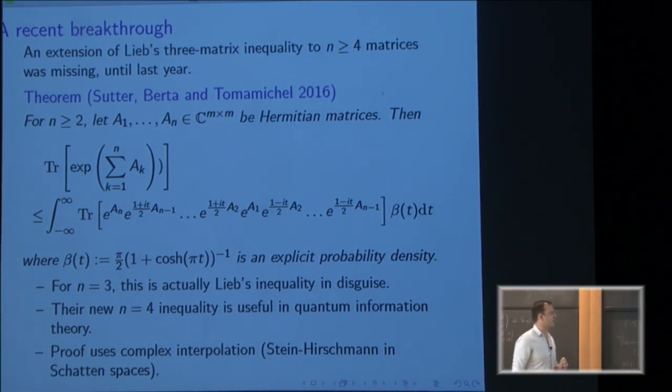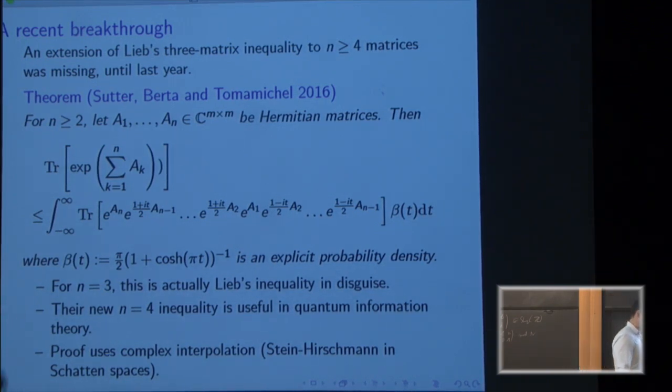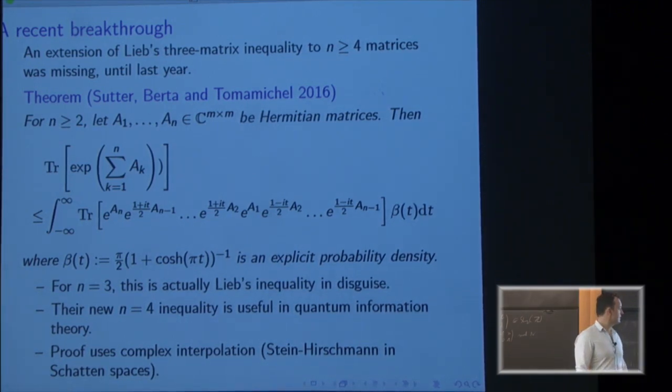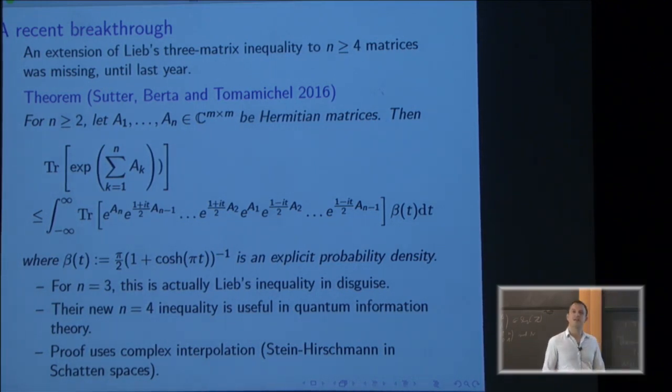Okay, the parameter t is averaged over with some explicit probability density. It's a very nice result. Now you might say, okay, you say there's an extension of Lieb's inequality, but it looks quite different for n equal three. There's a complex number, there's an integral over it. The other one had resolvents. But it actually, by just the computation of two integrals, turns out they're the same for n equal to three. The right hand sides. Presumably beta is sharp. I mean, it's the right function. Yeah, yeah, yeah, that's right.